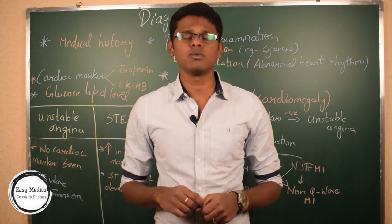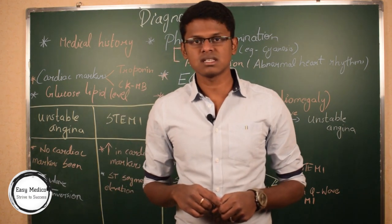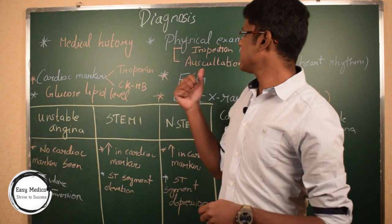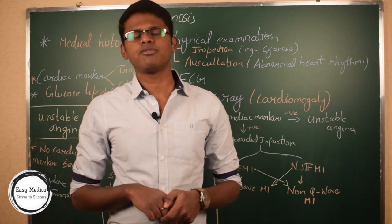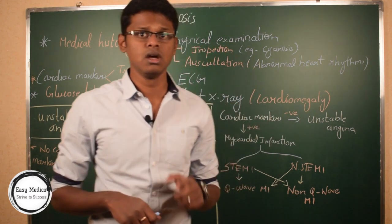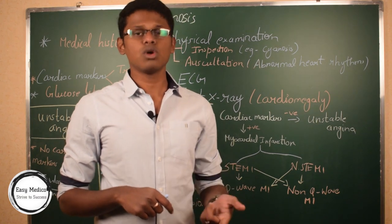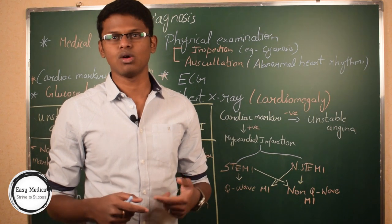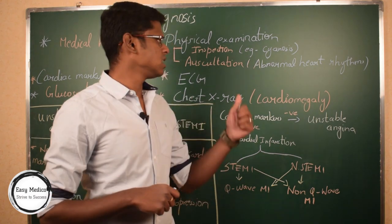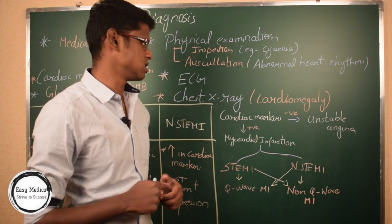Now let's discuss the most important part, which is diagnosis. The first and foremost thing, whatever the disease, is to check the medical history of the patient — both anamnesis morbi and anamnesis vitae. Next is physical examination. We will focus on two diagnostic methods: first is inspection, where you check for cyanosis — the blue discoloration of the patient's skin or peripheral parts. Second is auscultation, where you check for abnormal heart rhythms, such as tachycardia or bradycardia.